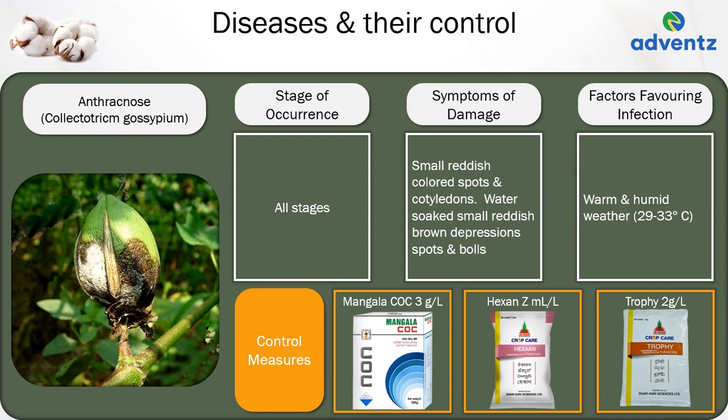The next disease is anthracnose. The causal organism is Colletotrichum gossypii. Anthracnose can occur at all stages. The symptoms of damage are small reddish coloured spots on cotyledons, and water-soaked small reddish-brown depressed spots on bolls. Warm and humid temperatures between 29–33°C favour anthracnose. Control: apply Mangala COC at 3 grams per litre, or Jai Kisan Hexan at 5 ml per litre, or Jai Kisan Prophy at 2 grams per litre.